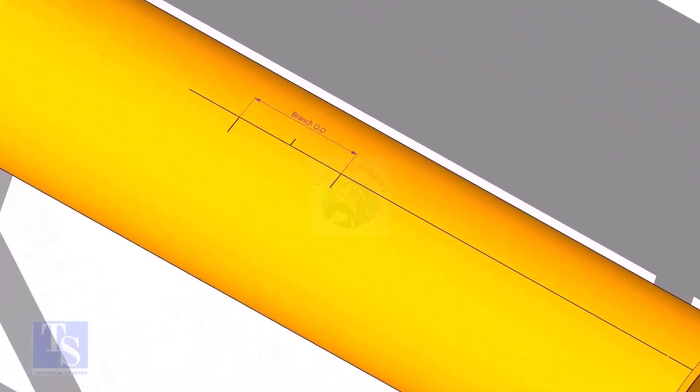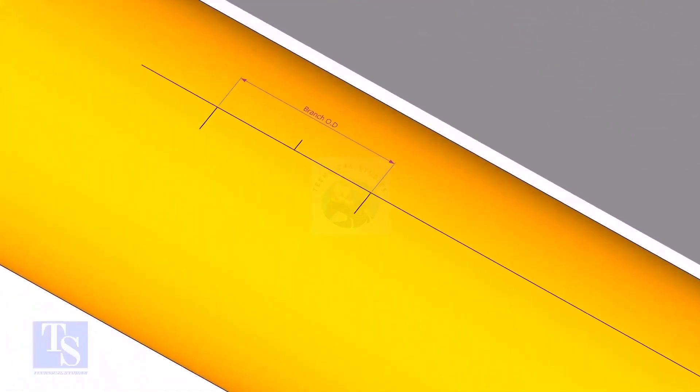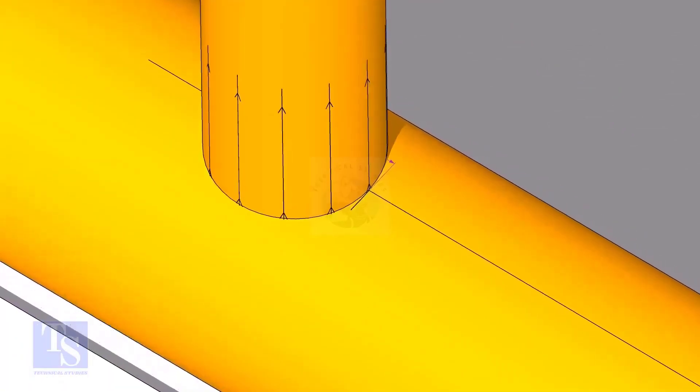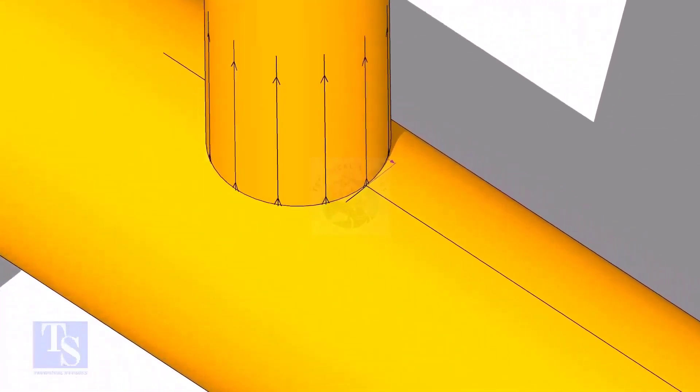Mark the branch OD on the center line of the header. Put the branch exactly on this marking, matching the branch center line.